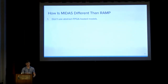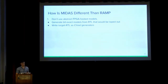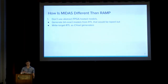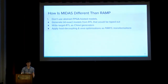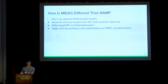What MIDAS does differently from RAMP: rather than writing abstract FPGA-hosted models, we generate bit-exact models from RTL that would be taped out. We write tape-out RTL in Chisel generators, so we can do design space exploration and simulator reconfiguration simply by generating a different instance. MIDAS performs host decoupling — transforming target RTL into something that can accept and produce tokens — as well as area optimizations, as FIRRTL transformations. The resulting model is faithful to the source RTL, does not need to be re-validated, but still provides benefits of the RAMP techniques.